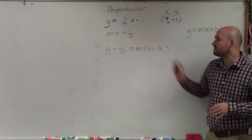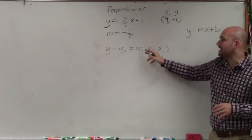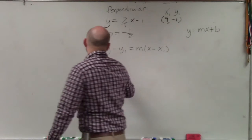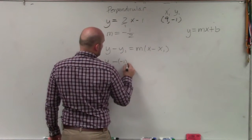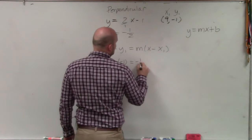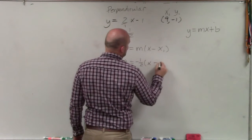I'm going to plug those points in for x1 and y1, and I'm going to plug in negative 1 half in for m. So I'd have y minus negative 1 equals negative 1 half times x minus 9.